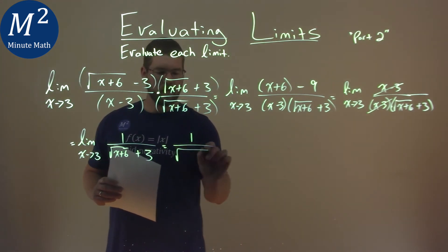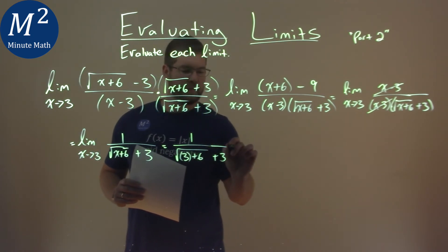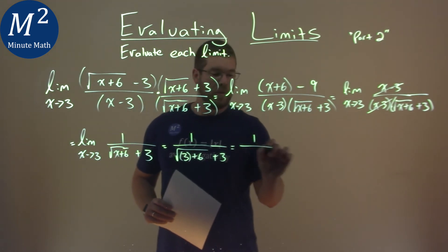So we have 1 over the square root of 3 plus 6 and we're plugging that 3 in and then we have a plus 3 over here. Keep simplifying. 1 over, well, 3 plus 6 is 9, square root of 9 plus 3.